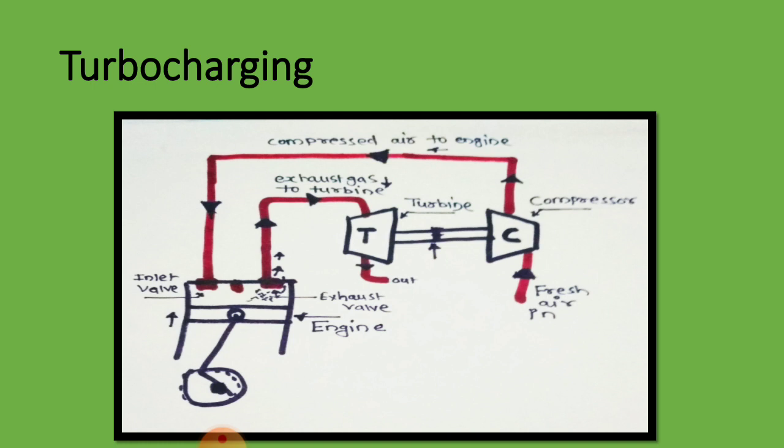In supercharging we use a compressor as a supercharger, and in turbocharging a turbine is used as a turbocharger — that is why the engine is called a turbocharged engine. The key difference is that the supercharger is directly run by the engine power, but in a turbocharger the compressor is run by the turbine, and that turbine is run by the exhaust gas.